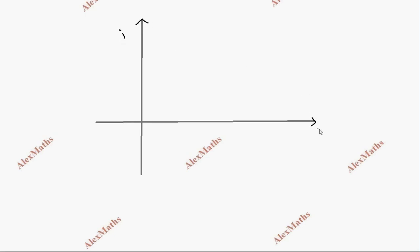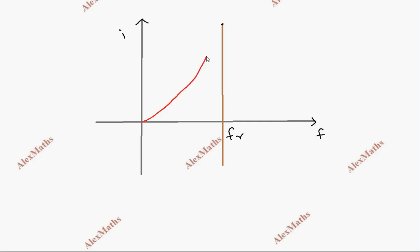At a particular resonant frequency, the current reaches its maximum value. Looking at the graph, as frequency increases, the current increases, reaches a maximum at the resonant frequency, and then decreases on either side.